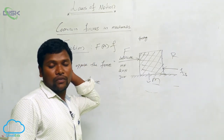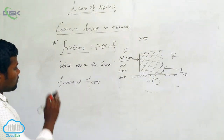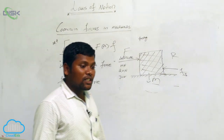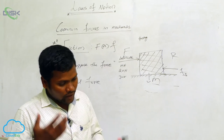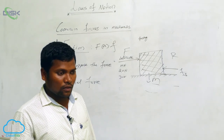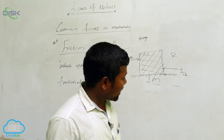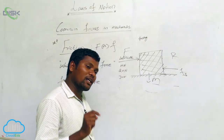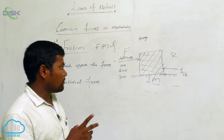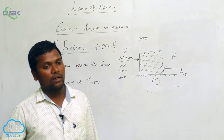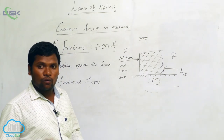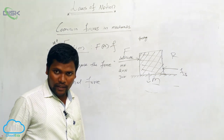There are different types of friction. In our syllabus there are three types: the first is static friction, also called limiting friction; the second is kinetic friction, also called dynamic friction; and the third, very important for exams, is rolling friction. We will now discuss each one — what is static friction, what is kinetic friction, and what is rolling friction.